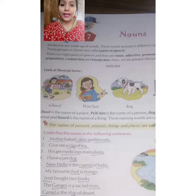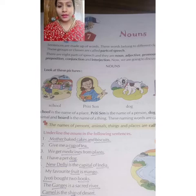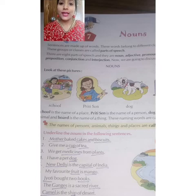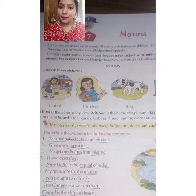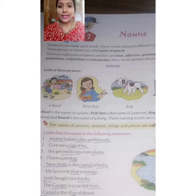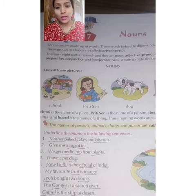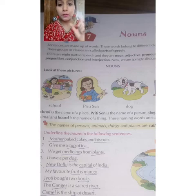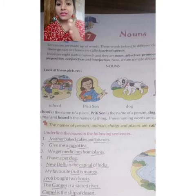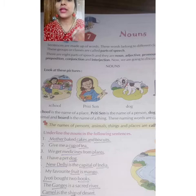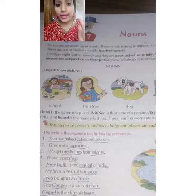Now, why are we studying nouns? We have to study some parts of a sentence. A sentence is a group of words. In a sentence there are different types of words — noun, adjective, pronoun, preposition, conjunctions, verbs — yeh sab cheez ek sentence mein hoti hai. So one by one we will study what these are, why they are there, and how they work.